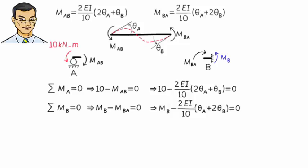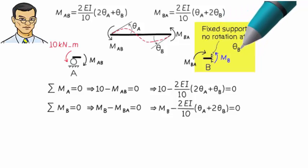A close examination of the problem, however, reveals that the equations contain only two unknowns. We actually know the numeric value for theta B. It is zero. Why? Because the right end of the beam is fixed, meaning there is no rotation at joint B. This allows us to rewrite the equilibrium equations as shown.